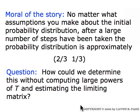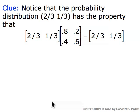The question is, how could we determine that without computing large powers of T and estimating what the limiting matrix is? Here's a clue: notice that this probability distribution, two-thirds and one-third, has the property that if you take that probability distribution and multiply it times the original transition matrix, you just get the same numbers back again.